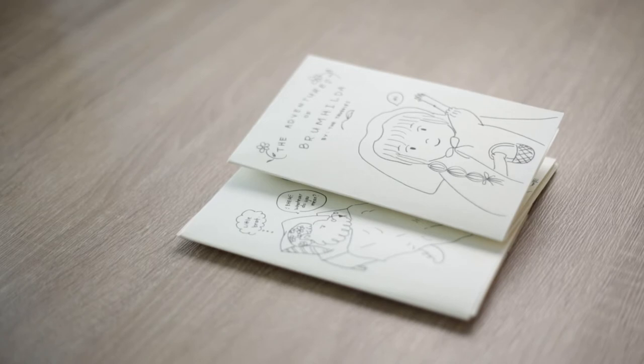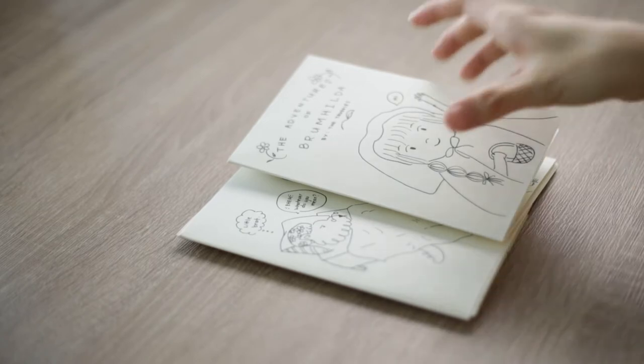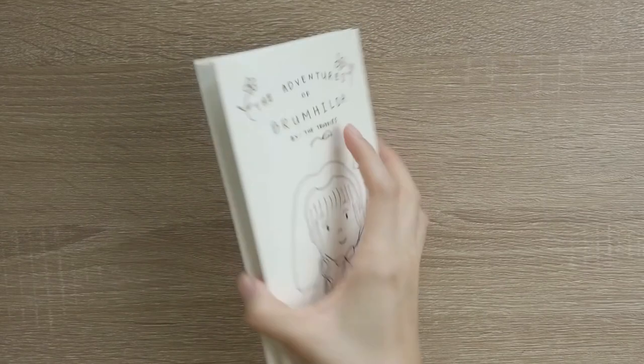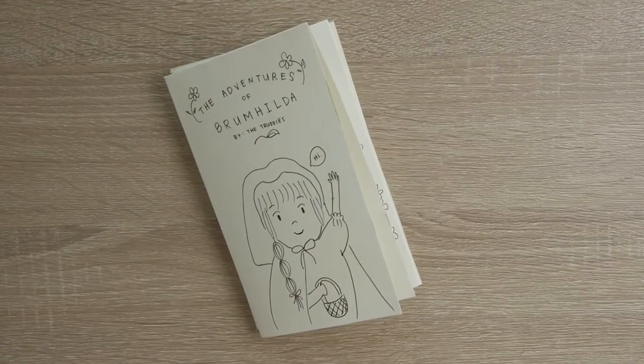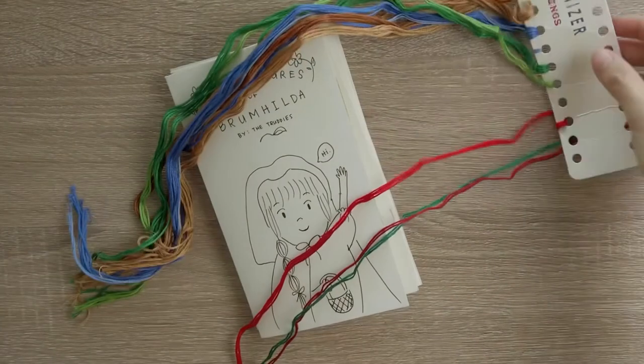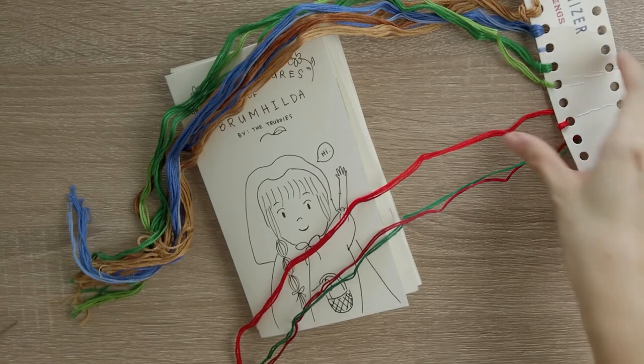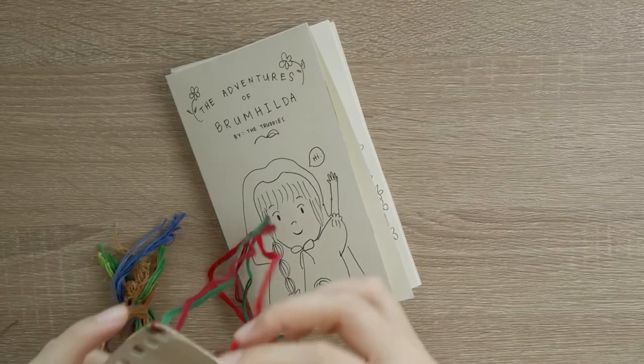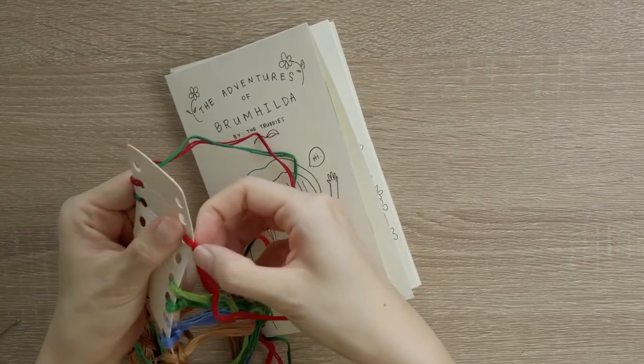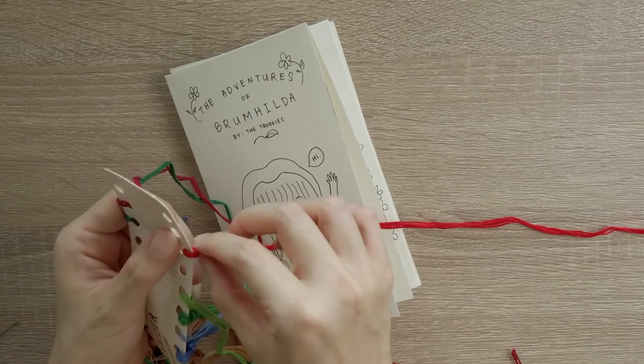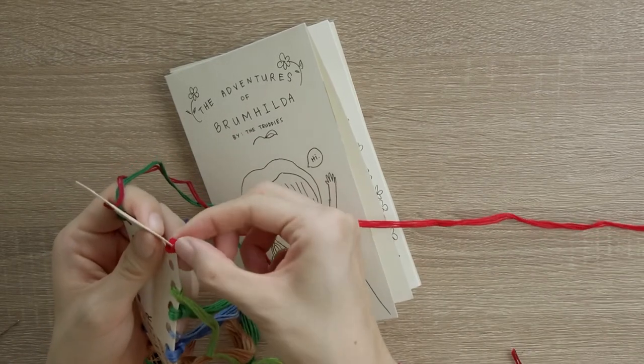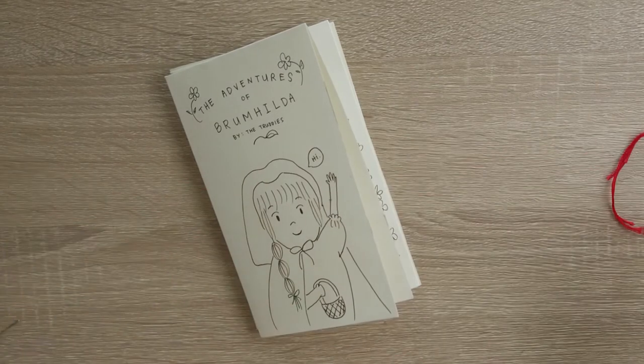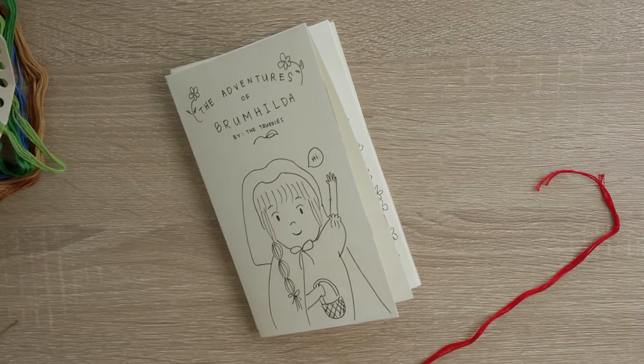All right I am all done and the next step would be to put these two booklets together to make one book like I did in my little sample. This time I'm gonna use some embroidery floss, is that what this is called? I think that's what this is called, embroidery thread. And of course we're gonna go for the red one because it is the story of Little Red Riding Hood essentially.